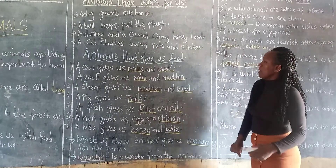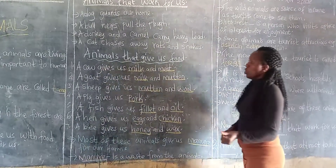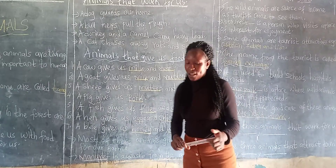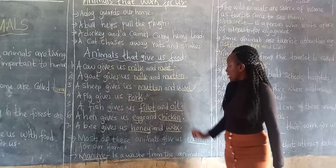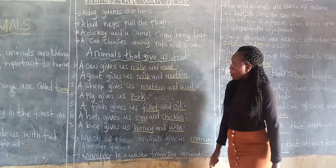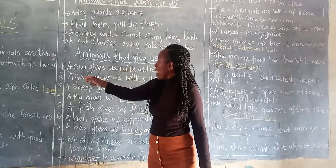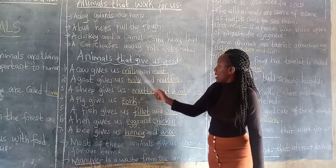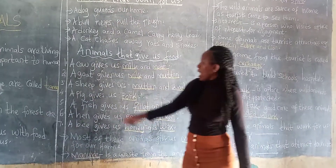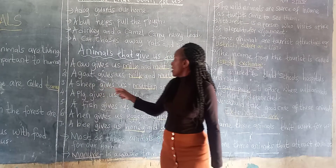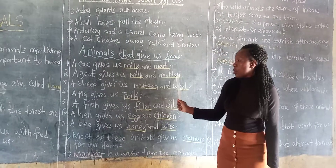Now we go to the animals that give us food. So we have so many animals that provide us with food but I have just written some of them. And we are going to start with a cow. So number one, a cow gives us milk and meat. Then a goat gives us milk and mutton.